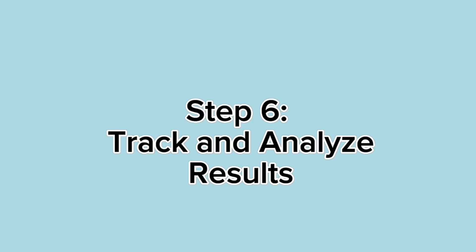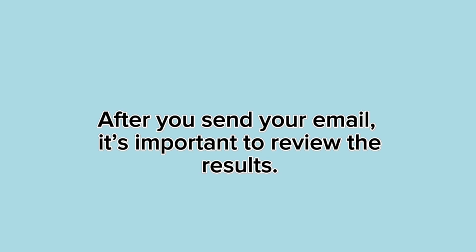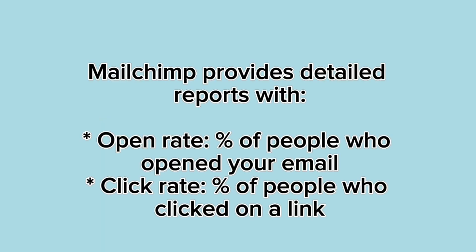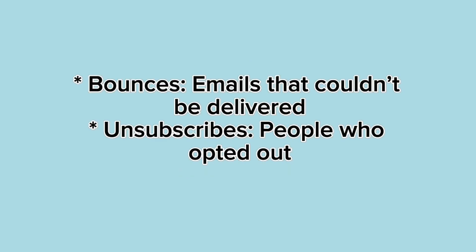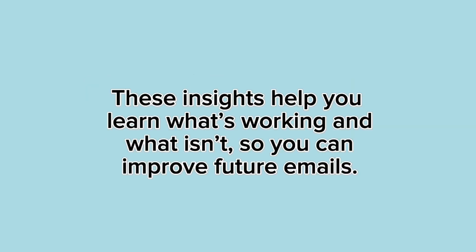Step 6: Track and analyze results. After you send your email, it's important to review the results. Mailchimp provides detailed reports with: open rate (percent of people who opened your email), click rate (percent of people who clicked on a link), bounces (emails that couldn't be delivered), and unsubscribes (people who opted out). These insights help you learn what's working and what isn't, so you can improve future emails.